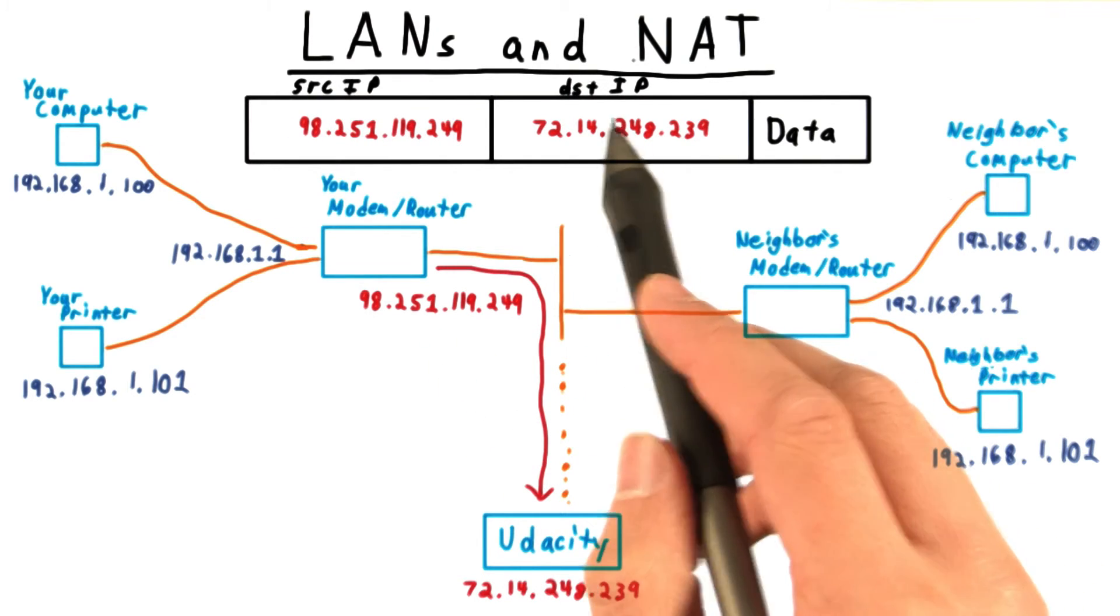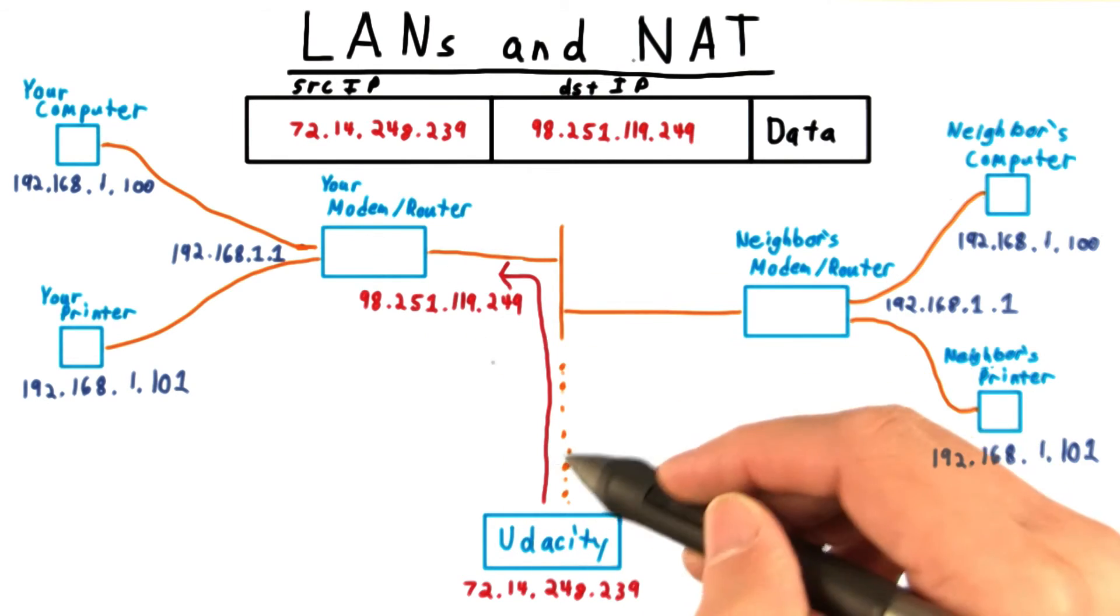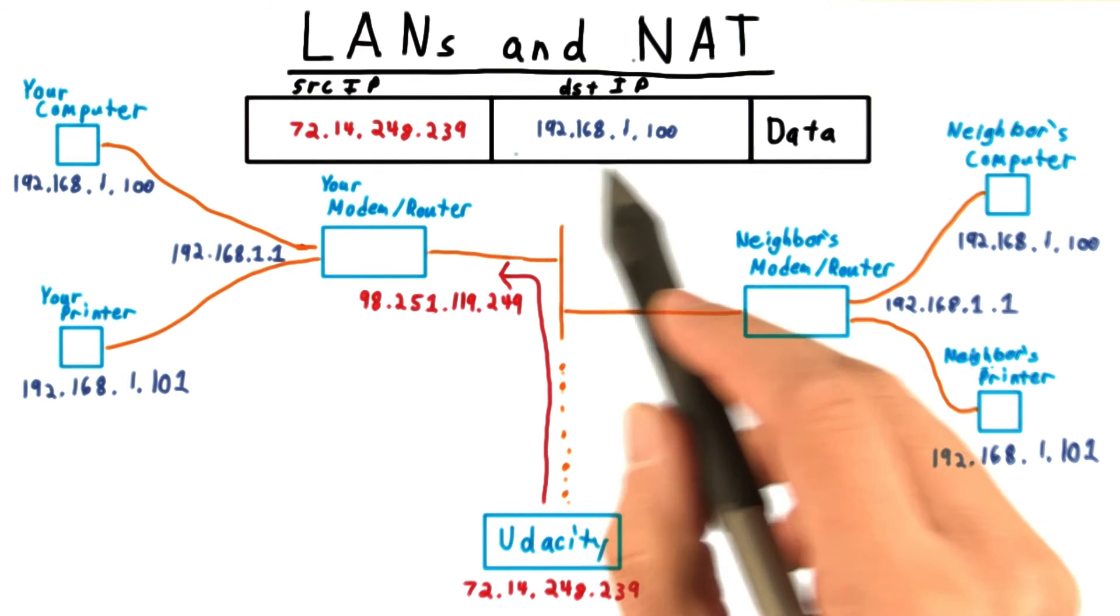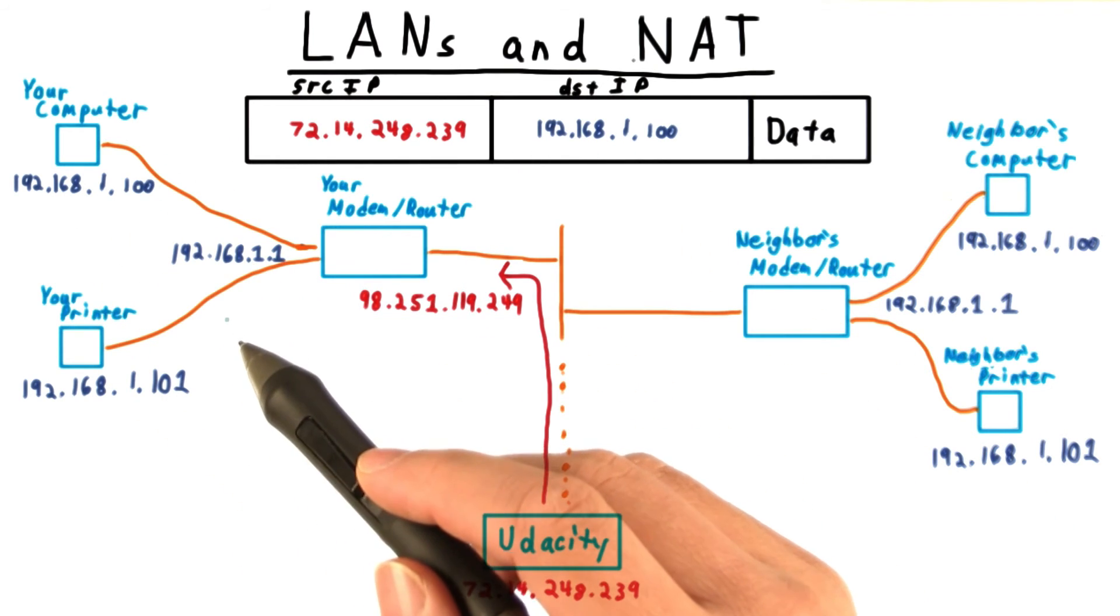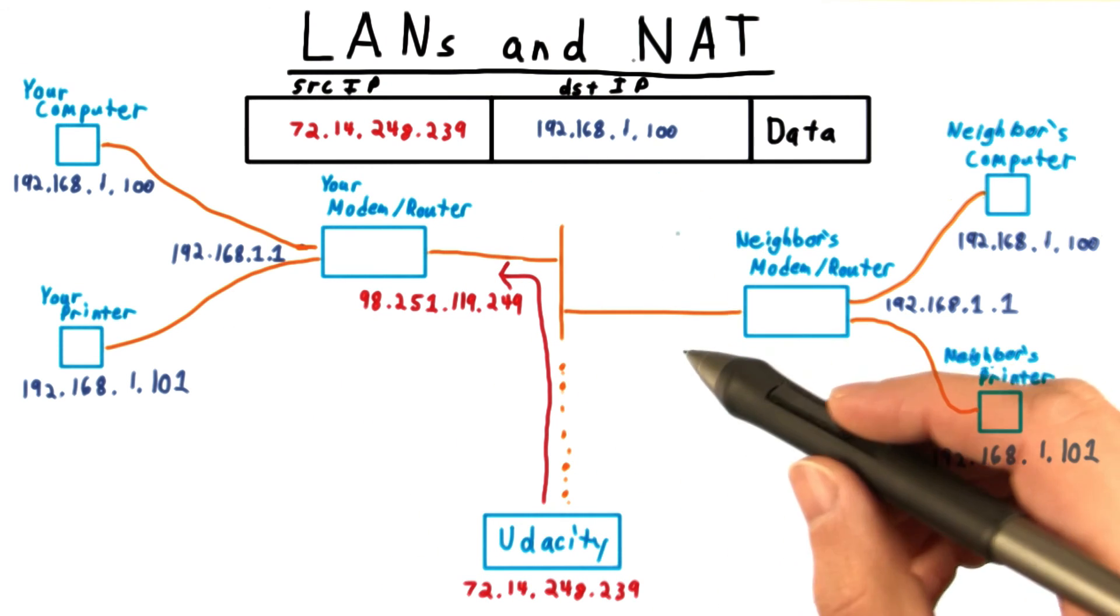So instead, your router actually swaps out your IP address for its own. This way, Udacity can just swap the source and IP addresses, and then send that packet back along with the data. The modem then just needs to change the destination IP back to your computer, and then route it along the private network in your home. This is a little trickier, and involves changing parts of the transport layer, which we'll discuss later.